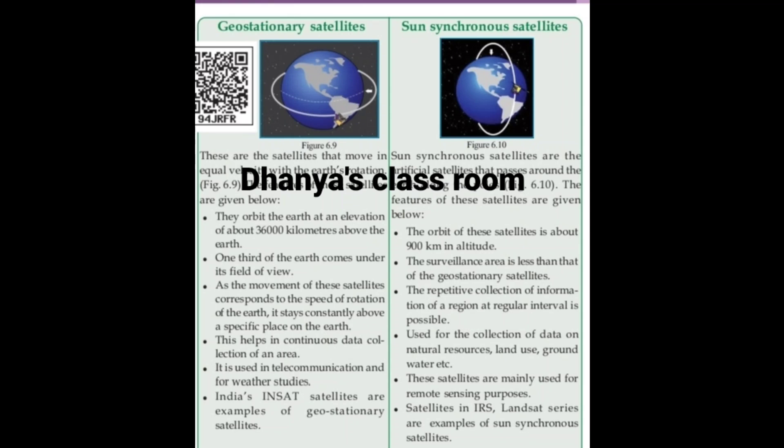Our first topic is geostationary satellites. These are the satellites that move at equal velocity with Earth's rotation. They orbit the Earth at an elevation of about 36,000 km above the Earth.